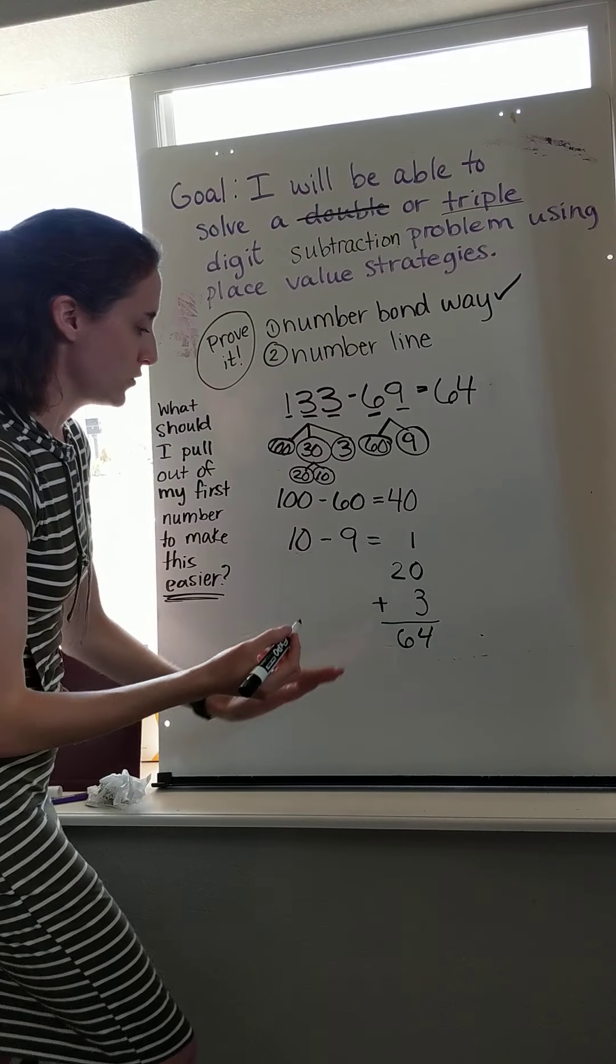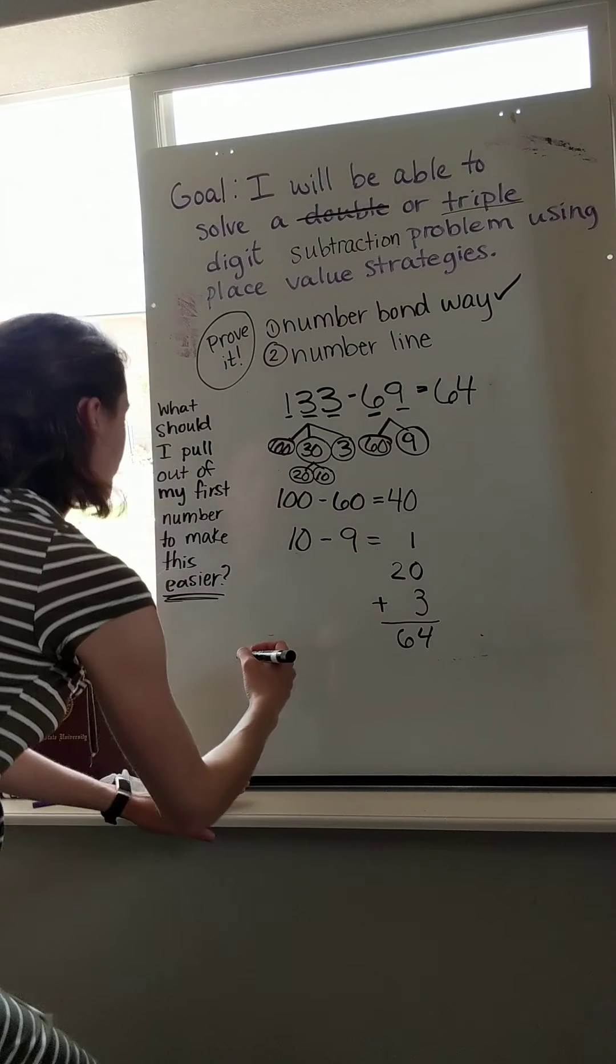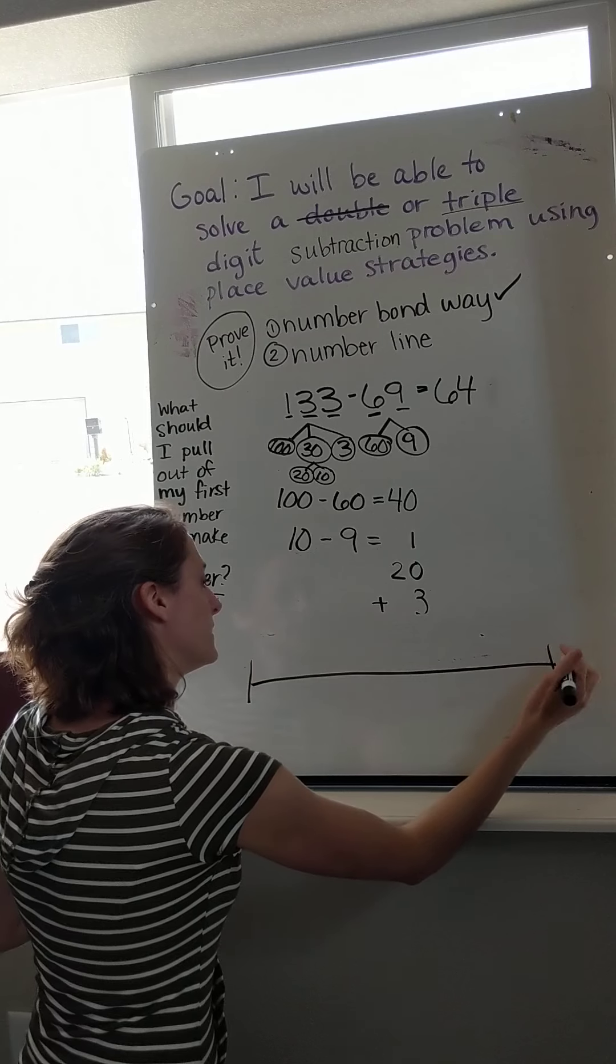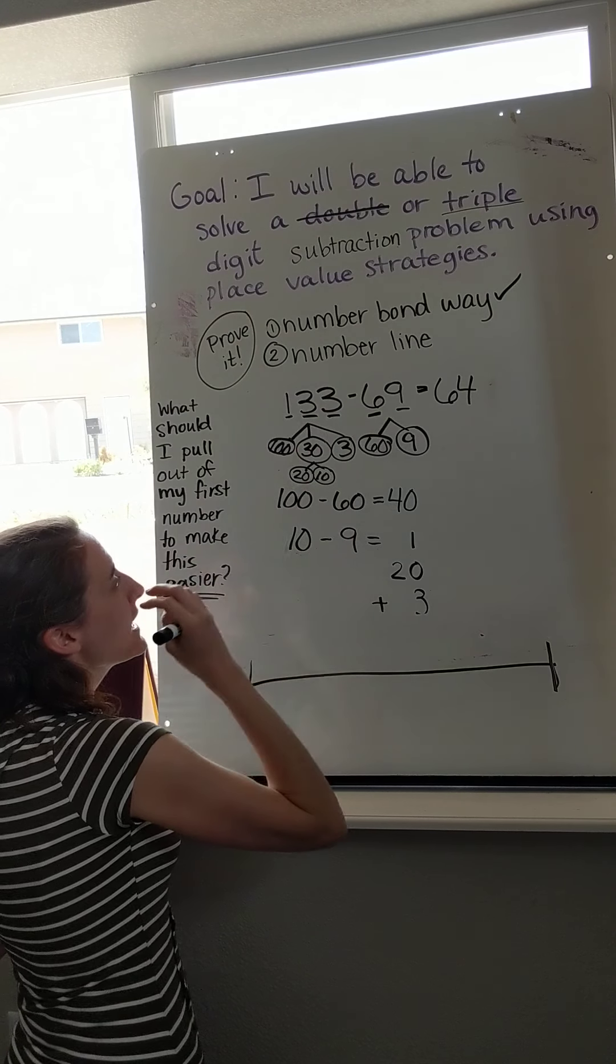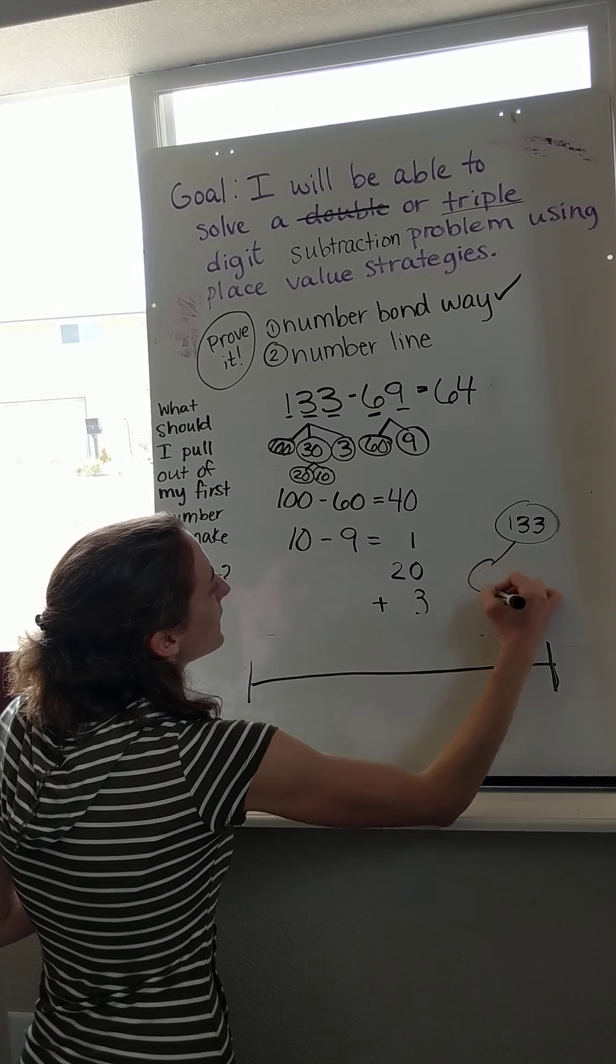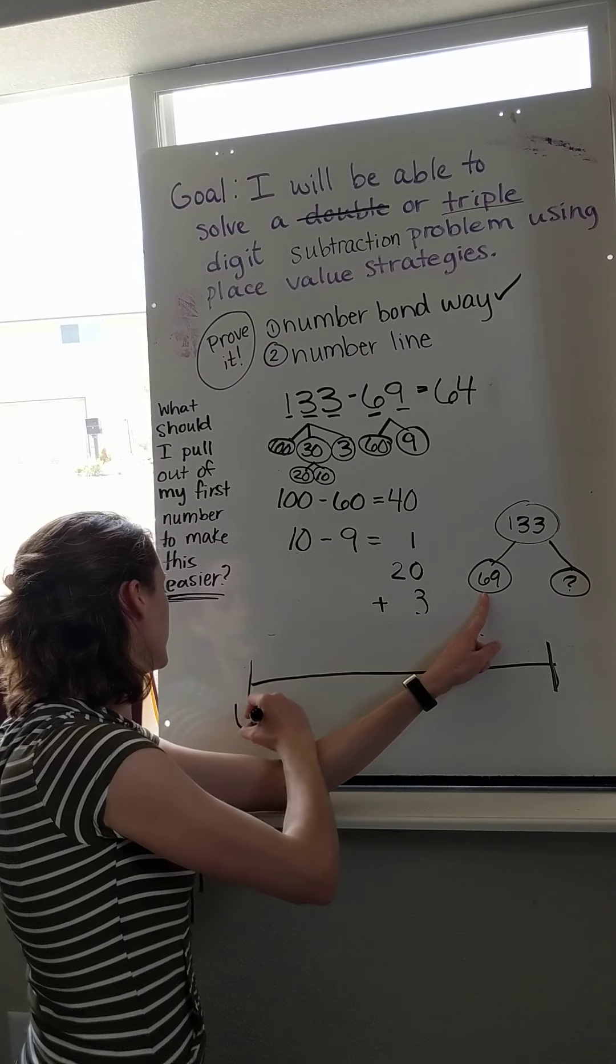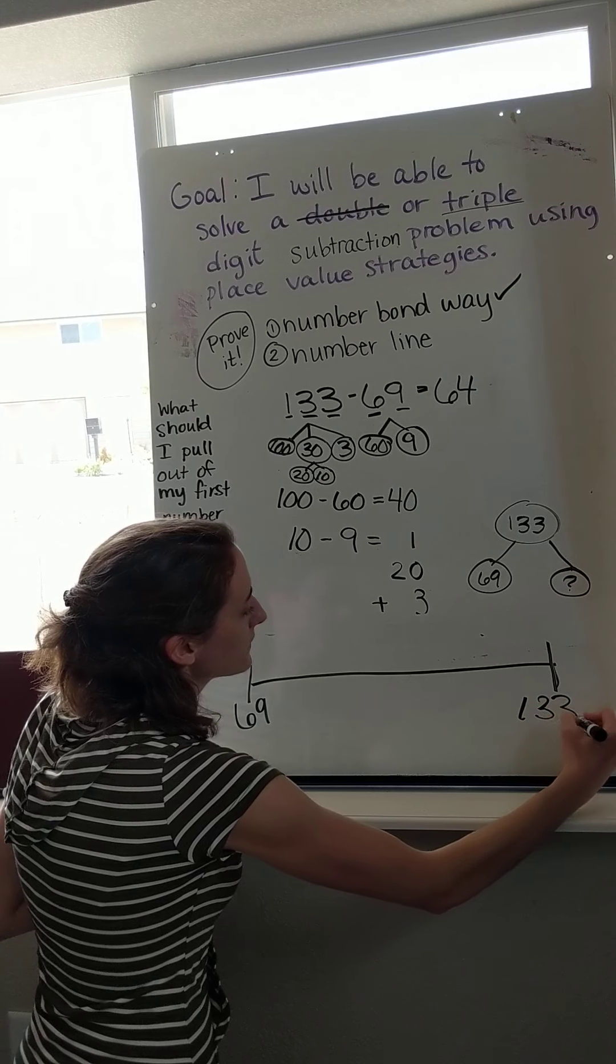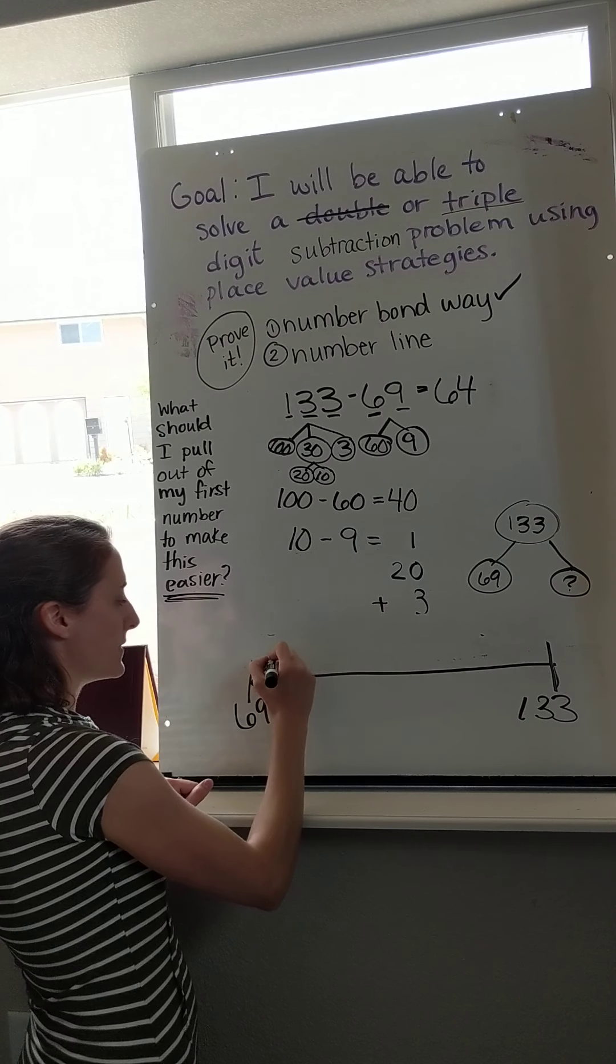So let me come down here and do my number line. So I know if I'm finding the difference, I know I'm subtracting to find what's in between the two numbers. Because my whole is 133. The part I'm taking out is 69 to find what is left. This is the same as thinking if I have 69 plus something else, the other part is going to make 133. So what is that other part? Let's find out. Let's count until we get to 133. So easily I know first I'm going to add on 1.